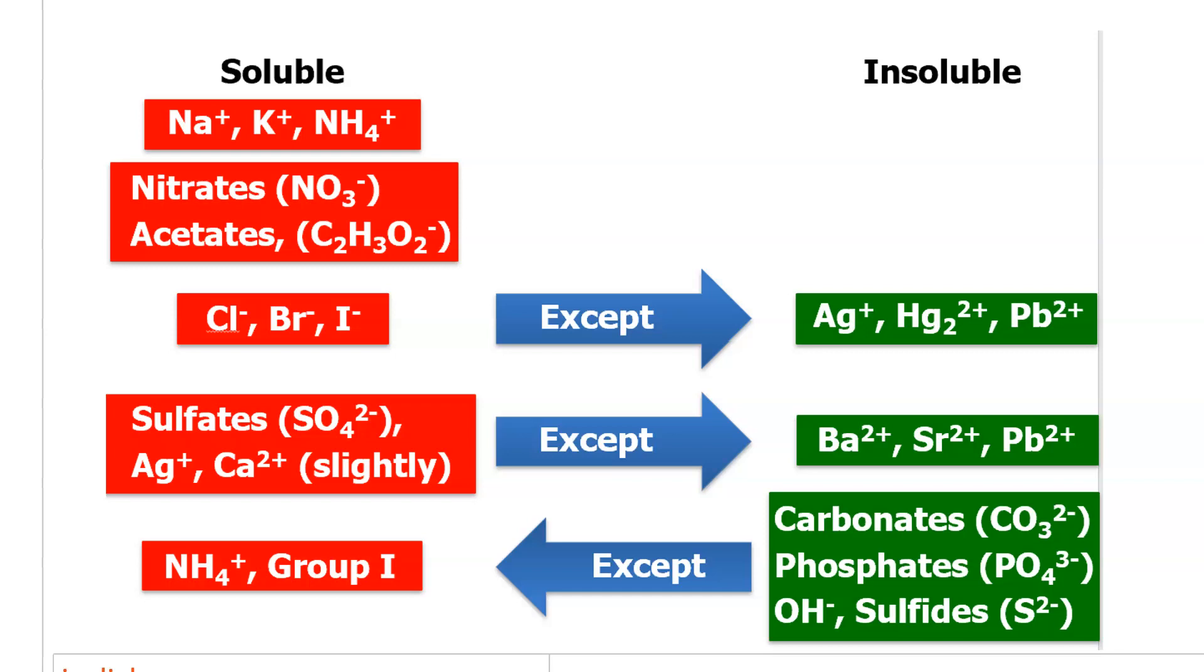So, on the other hand, down here, you have things that tend to be insoluble. So, if the anion is carbonate, phosphate, hydroxide, or sulfide, those tend to be insoluble. But, the exceptions are when the cation is one of these always soluble cations, NH4+, or group 1.